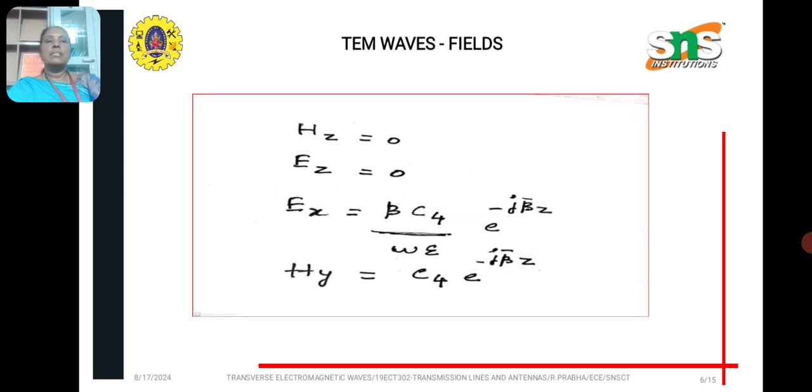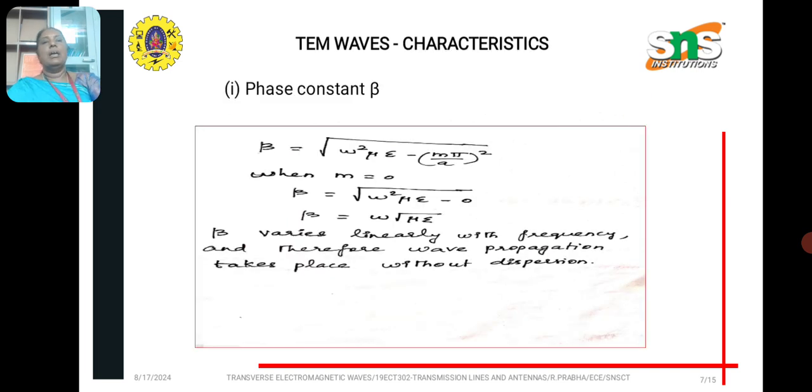So, it makes HZ zero, EZ zero, EX is beta C4 omega epsilon into E power minus J beta Z. HY is C4 E power minus J beta Z.